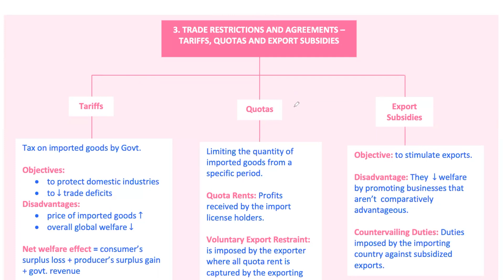Next, we've got voluntary export restraints, abbreviated as VERs, where the exporting country agrees to limit the quantity of goods they send to their trading partner. Export subsidies are another tool — this is where the government gives money or tax breaks to domestic companies to help them sell their goods abroad. An embargo is a total ban on trading specific goods. And lastly, domestic content requirements mandate that a certain percentage of a product must be made locally.